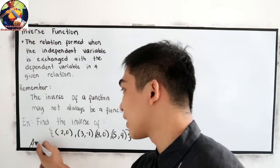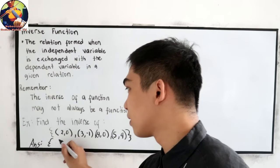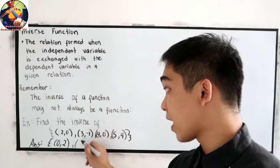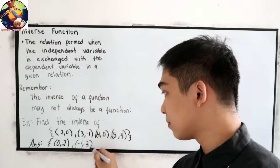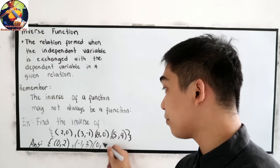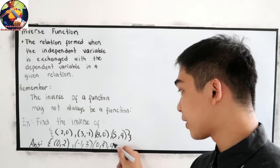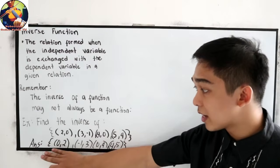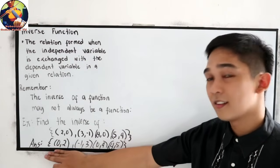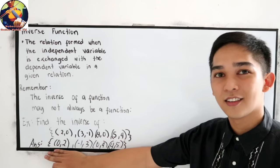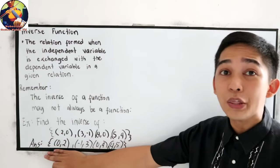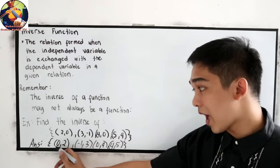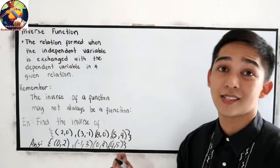So our answer is: (0, 2), (-1, 3), (0, 4), and (4, 5) — just interchange the coordinates. Now take a look at our answer. Is it a function or not? A function requires that no x-coordinate is repeated. We have two zeros as our x, so that means this is not a function.